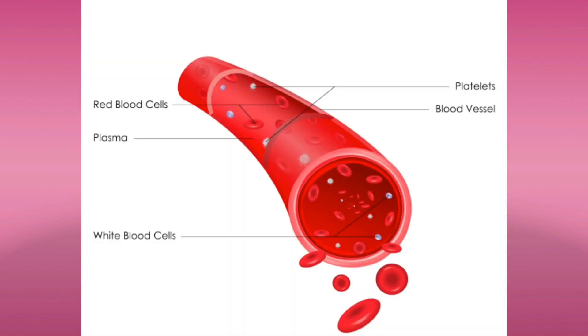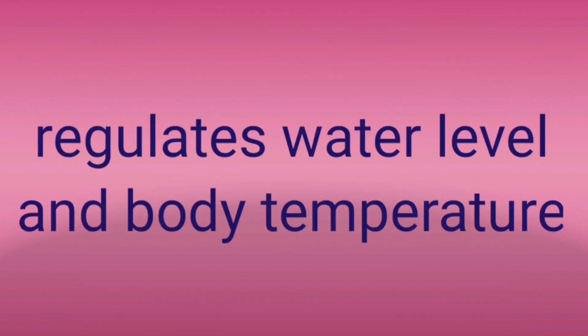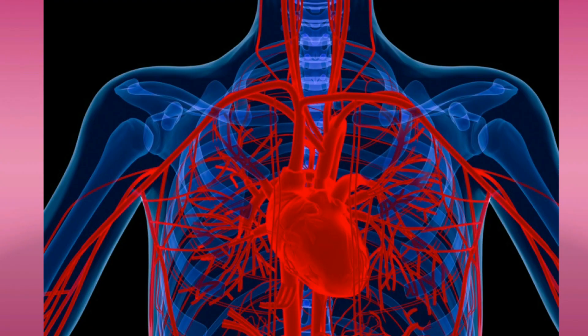The volume of blood in a human adult is 4 to 5 liters. Blood regulates water level and body temperature. It is pumped throughout the body by the heart, transporting nutrients, oxygen, waste and hormones from one part of the body to another. Blood takes oxygen to tissues and cells and finally reaches the lungs to take oxygen again.